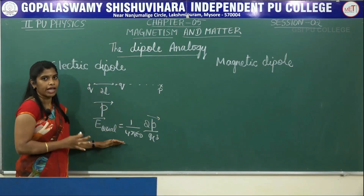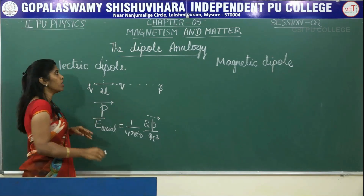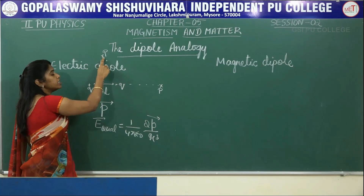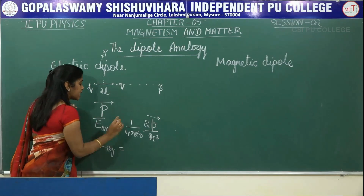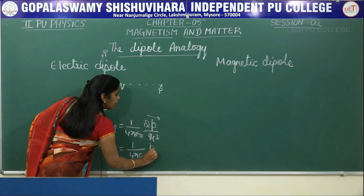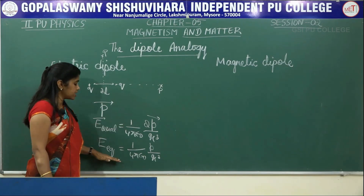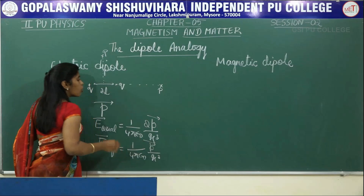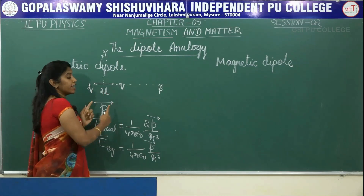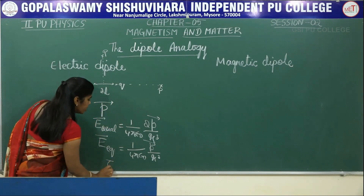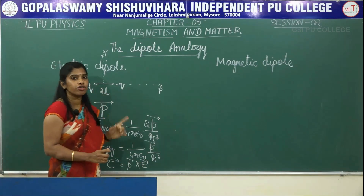This you have already derived. And also if you draw a line perpendicular to the axis of the electric dipole and mark a point on it, the electric field on the equatorial point is 1/(4πε₀) · P/R³. So this is E axial and this is E equatorial. Also, when you place an electric dipole in an external electric field, it experiences a torque given by τ = P × E. These things you have studied in the first unit.